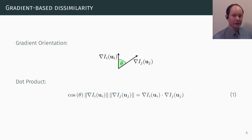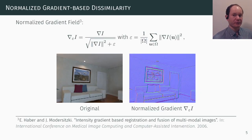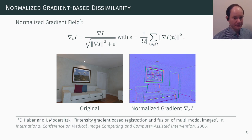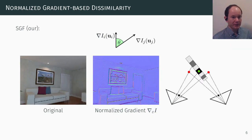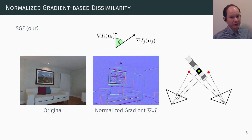Standard vector normalization would amplify noise, so we base our work on the normalized gradient field by Haber and Modersitzki. We regularize the image gradient by the mean squared gradient magnitude. Simply using the dot product on the normalized gradient field is insufficient, since it would draw weak gradient regions to match with strong gradients, thus skewing depth estimates.